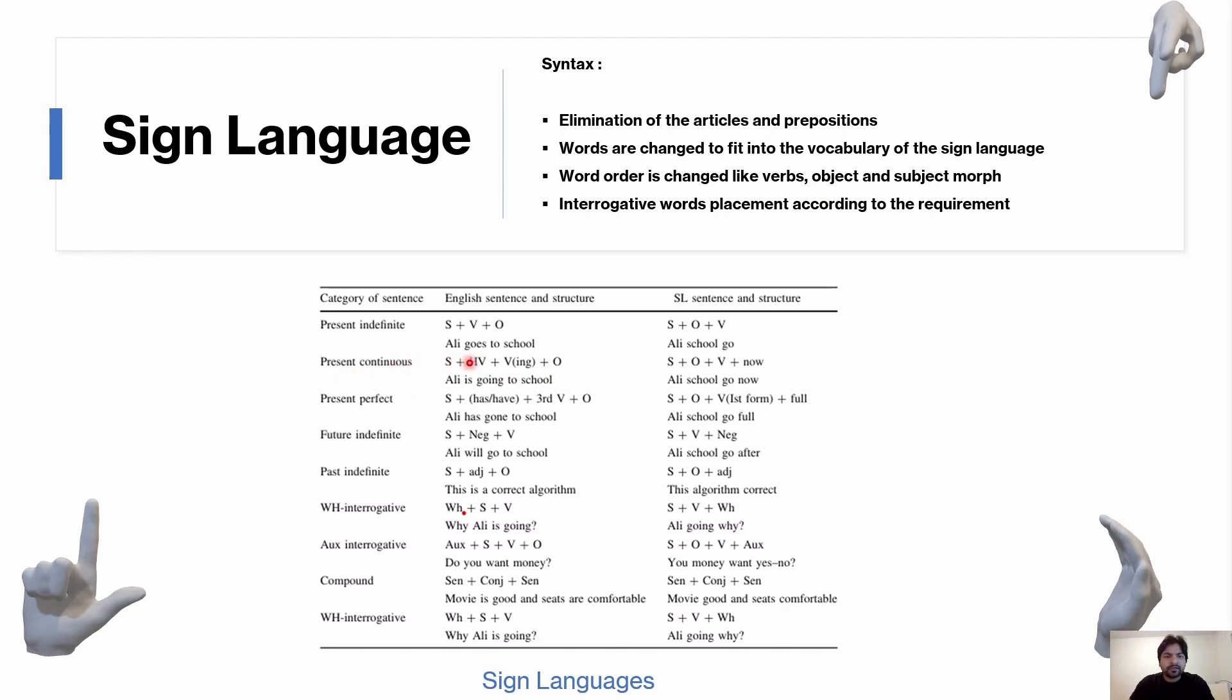For example, here you can see 'Ali goes to the school' becomes in sign language 'Ali school go'. You can see that 'goes' becomes 'go', and the verb was sent to last and the object came first.